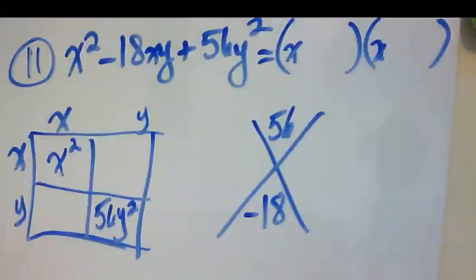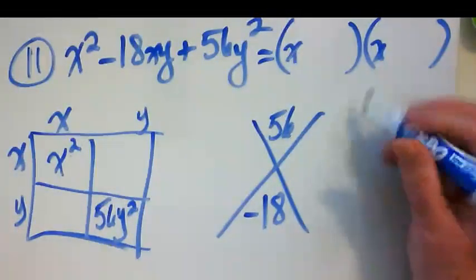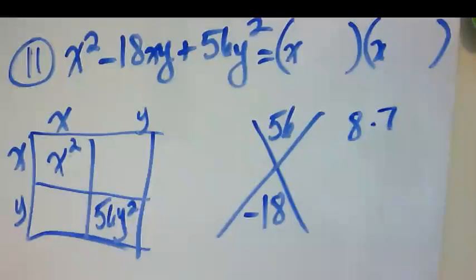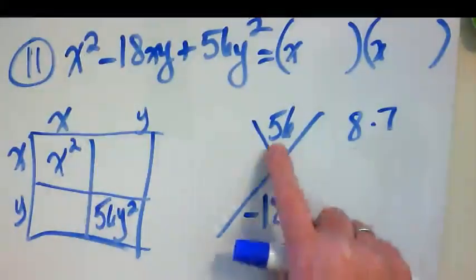And I'm going to use my x puzzle. Put my 56 up here, my negative 18 down here. And I want to try to figure out what are two things that when I add them together I get negative 18, but when I multiply them together I get 56. Well, when I think of 56 in my times table, I think of 8 times 7.